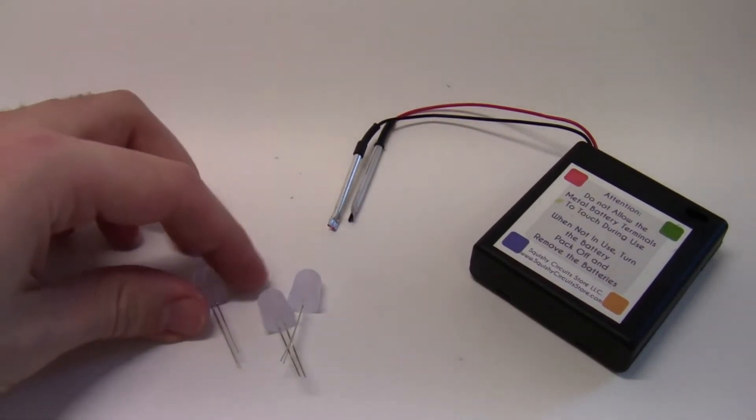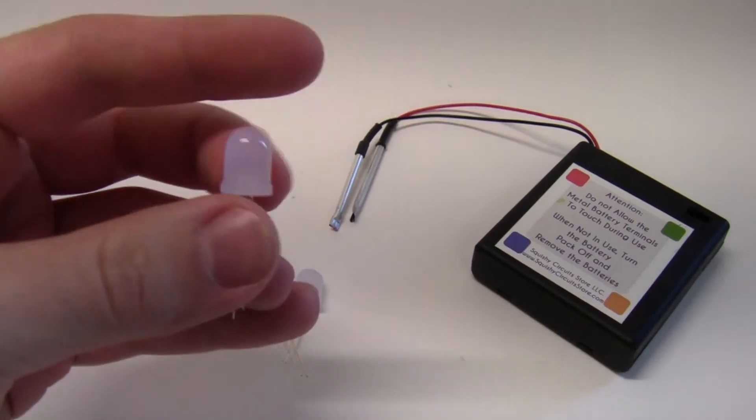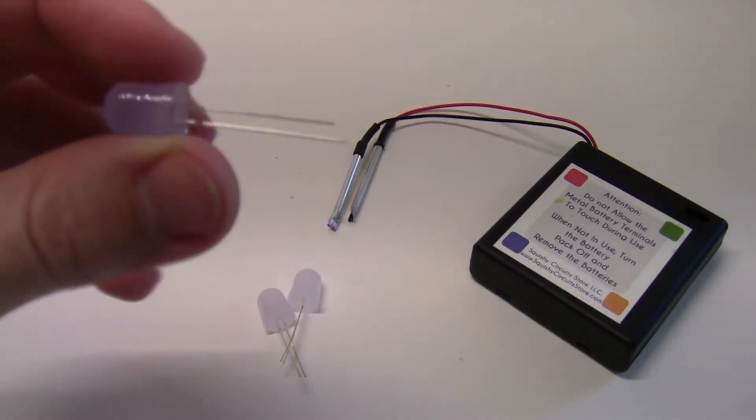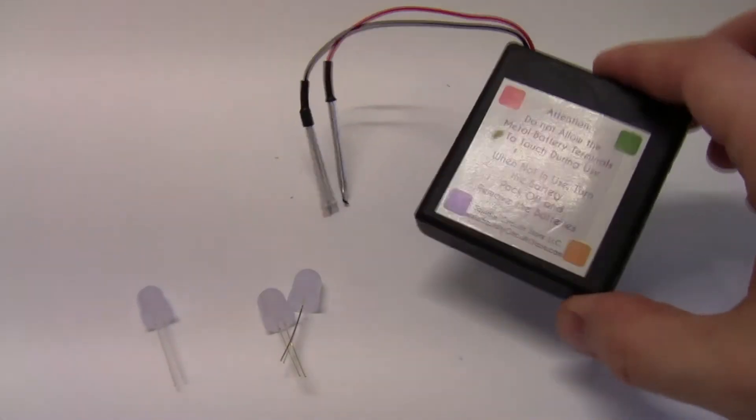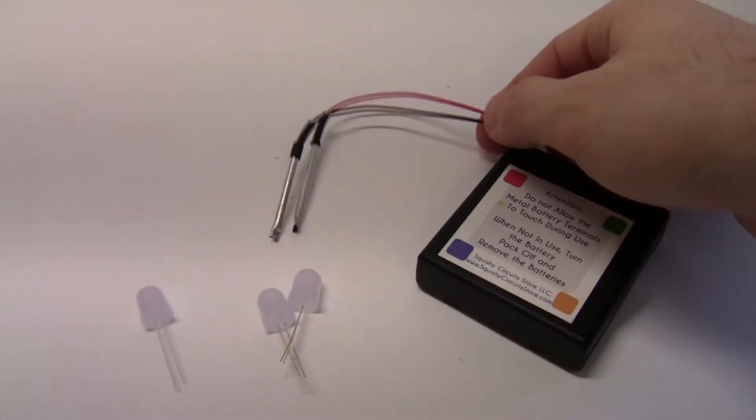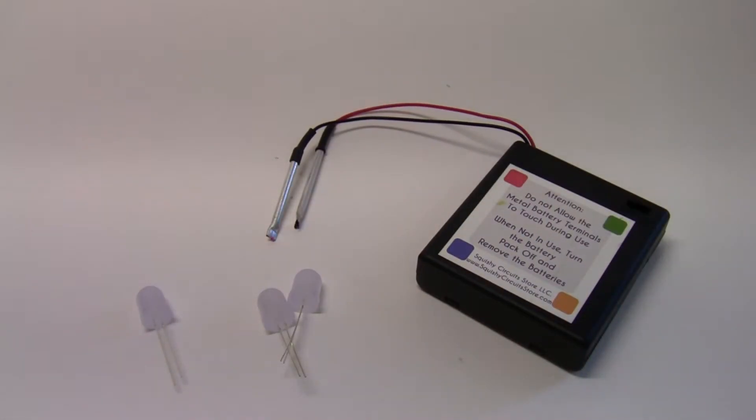So we just want to focus on the LEDs, which are these little translucent plastic bulbs with metal wires sticking out of the bottom, and the battery pack, which is the black rectangular container with red and black wires sticking out of it, so get those out of your kit to start.